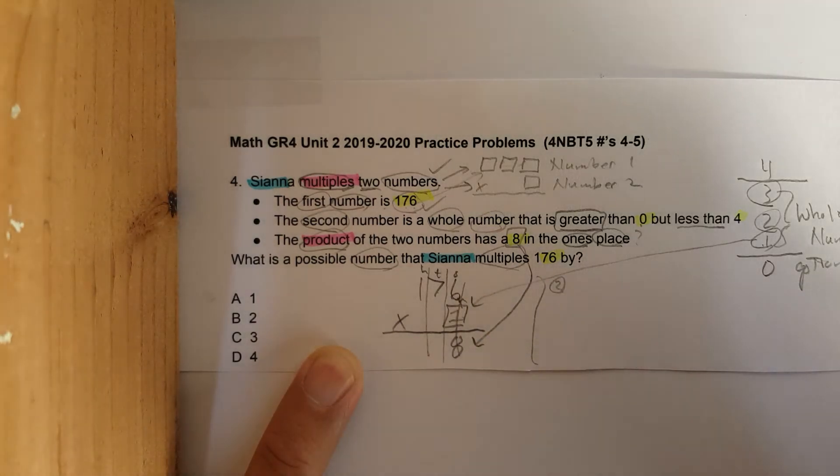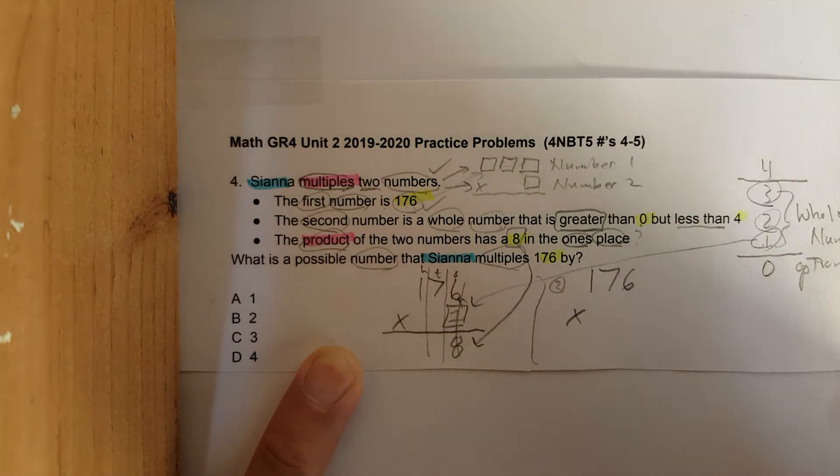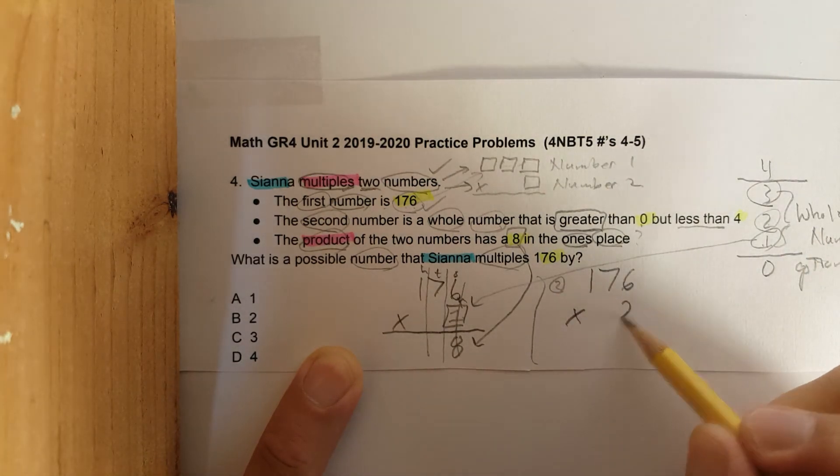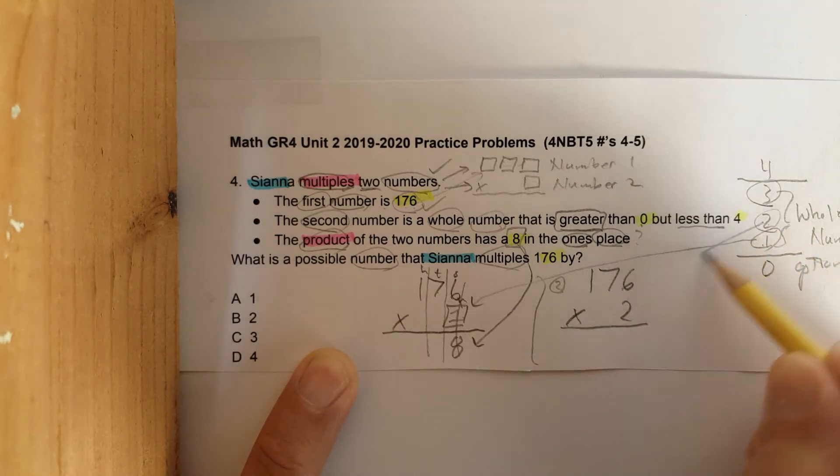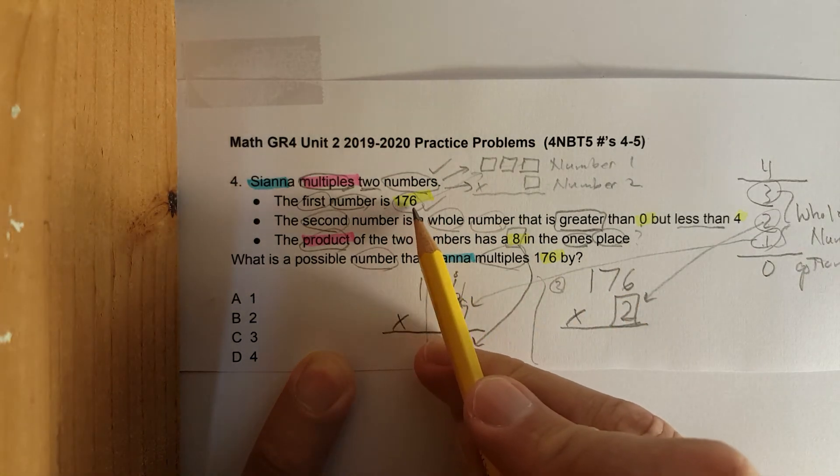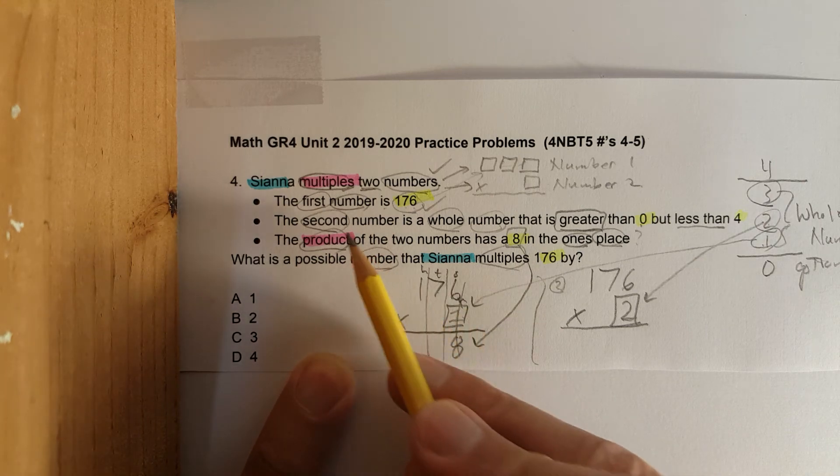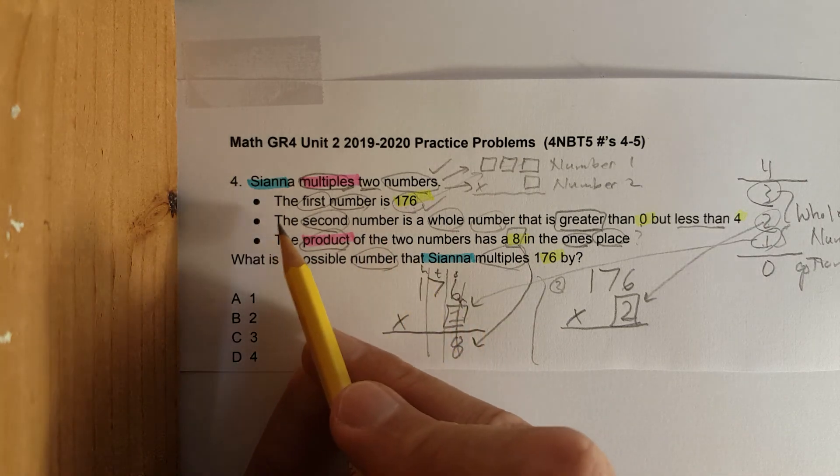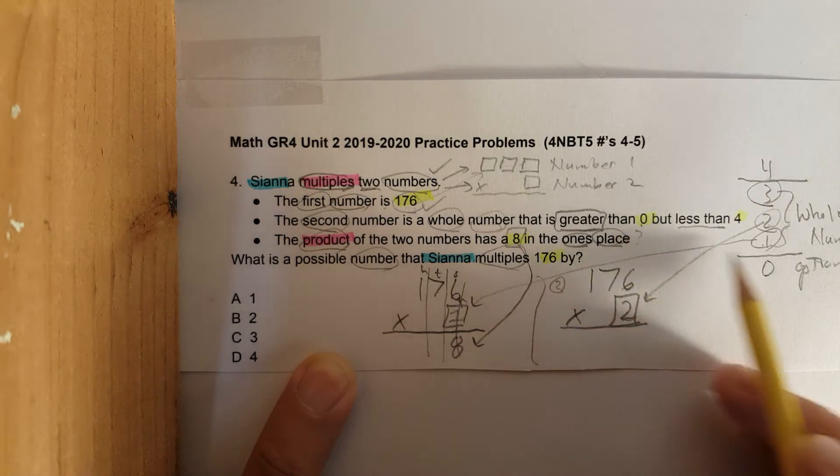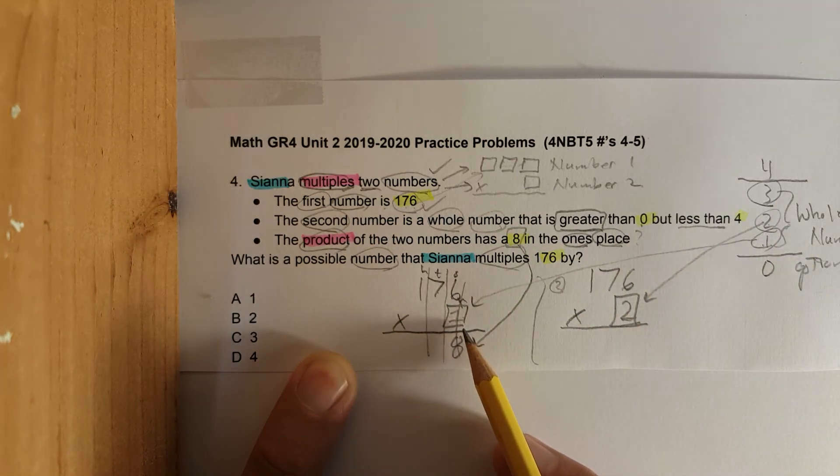So we're going to try whole number two. Let's take 176 times two. We are just substituting the value. The first number is always going to stay the same: 176, 176. The only number that we are changing is the second number. And this second statement tells us it needs to be a one, two, or three. We just proved in this example, one times six is not an eight.